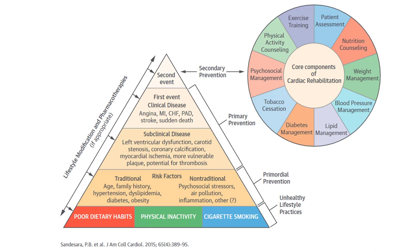There's a nice model here looking at the core components of cardiac rehab and how they intersect with prevention. Along the spectrum, lifestyle factors can lead to risk factors, subclinical disease, and then an event — and we're trying to prevent that second event, or even the first. The central components of cardiac rehab include exercise training, blood pressure management, weight management, and psychosocial counseling.